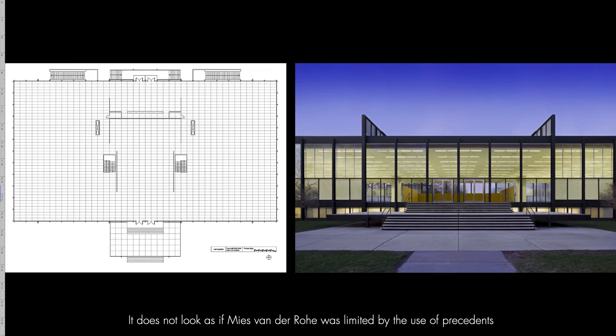Also in Mies van der Rohe's work you find the same thing. You look at these steel and glass boxes and sometimes you don't perceive that these diaphanous pavilions have a plan that is regular and symmetrical — features of the architecture they were trying to leave behind.